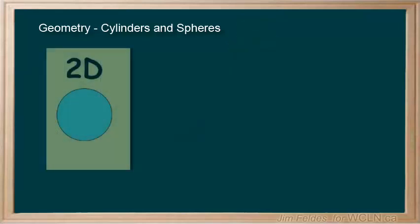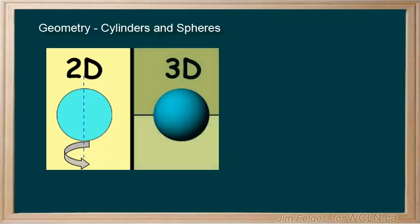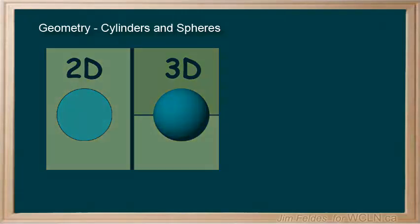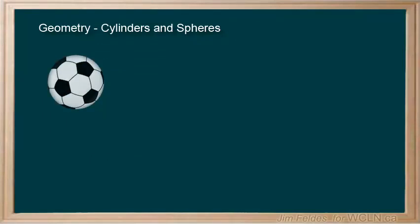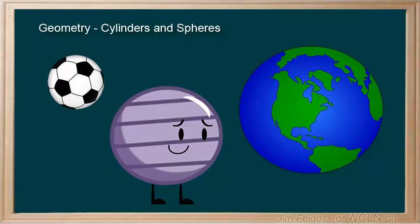If we were able to rotate a circle on an axis, we would scribe out a shape called a sphere. Spheres are of course everywhere. We play games with them, exercise on them, and ride on one shaped by the powerful force of gravity.